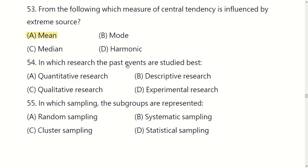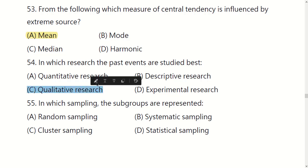In which research are past events studied best? Options are: quantitative research, descriptive research, qualitative research, or experimental research. The right option is C: qualitative research.